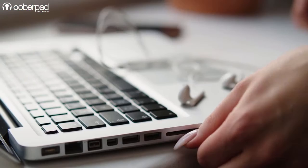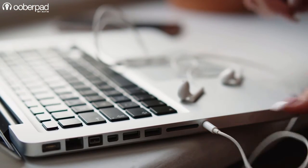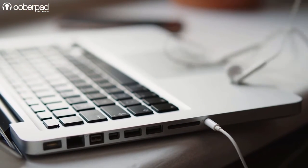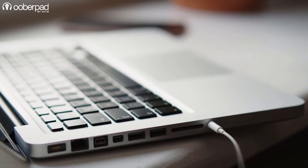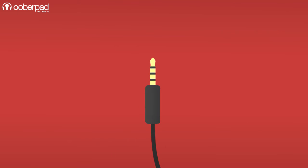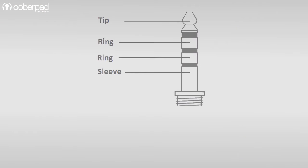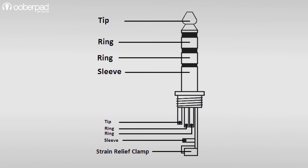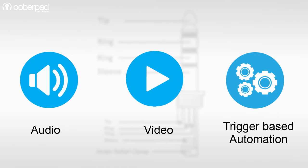TRRS connectors are found in newer smartphones and laptops which need to carry microphone signals required for making audio calls. It is important to understand that the difference lies in the pin configuration and wire count. Some manufacturers may use this interchangeably to transmit a variety of signals including audio, video and even trigger-based control signals for automation in some devices.